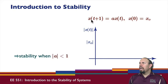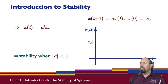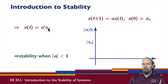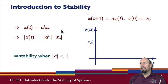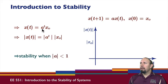Suppose we have this difference equation x(t+1) = ax(t), starting at some initial condition x-naught. The solution to this difference equation is x(t) = a^t times x(0). If we look at the magnitude of x(t), the magnitude of this product is the product of the magnitudes. The initial condition is where we start, and when t equals zero, a^t equals one, so we start at the magnitude x(0).